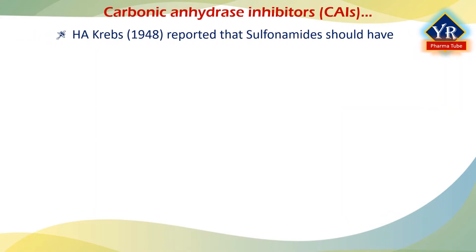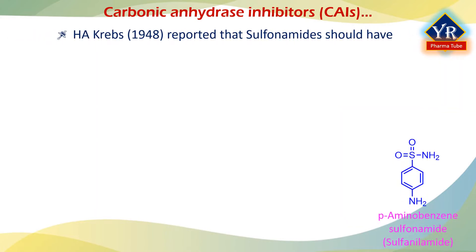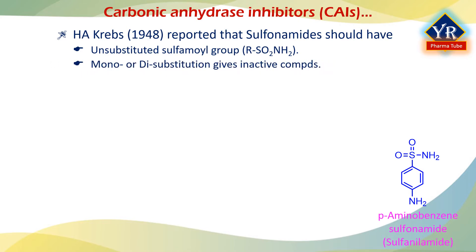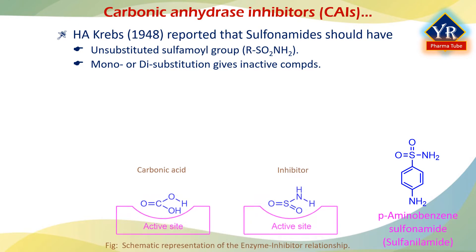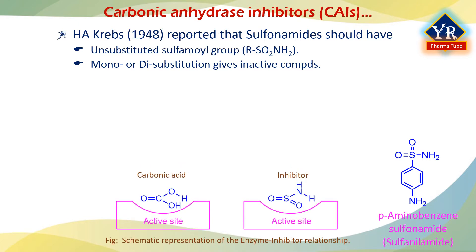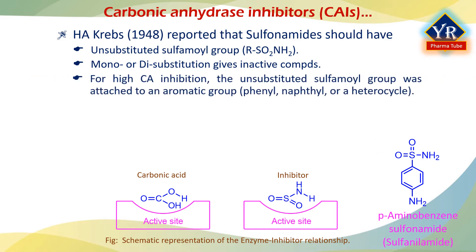H.A. Krebs reported that for inhibition of carbonic anhydrase, the sulfonamides should have an unsubstituted sulfamoyl group. Mono- and di-substitution on the sulfamoyl group gives inactive compounds. The special relationship between carbonic acid and the sulfamoyl inhibitor must be as shown in the figure. It was also observed that for high carbonic anhydrase inhibition, the unsubstituted sulfamoyl group was attached to an aromatic group, i.e. phenyl, naphthyl, or a heterocycle.